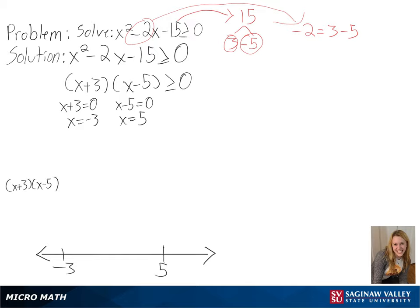A number we can use to the left of negative 3 is negative 4. And plugging that into our equation, we get a negative times a negative, so we will get a positive number.